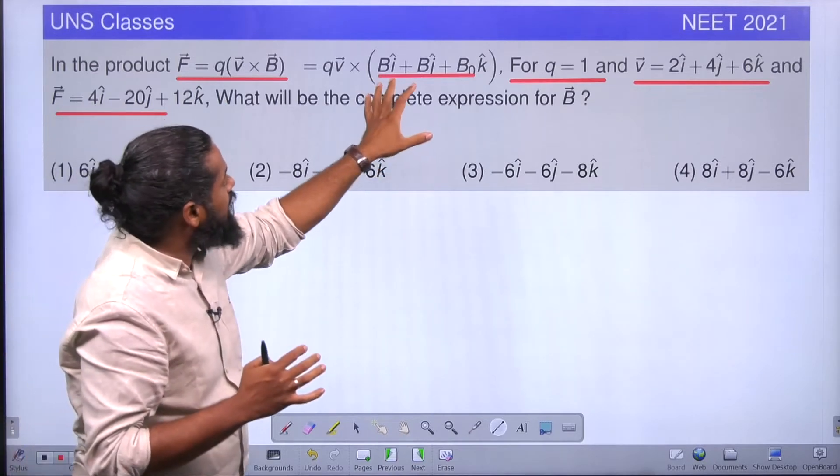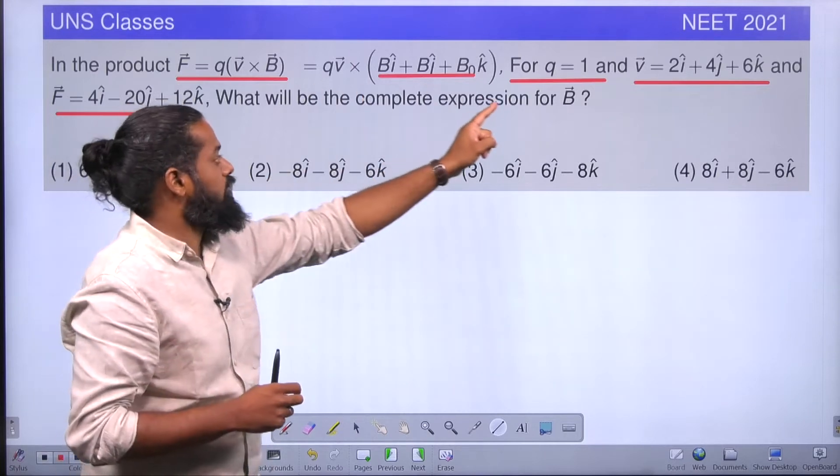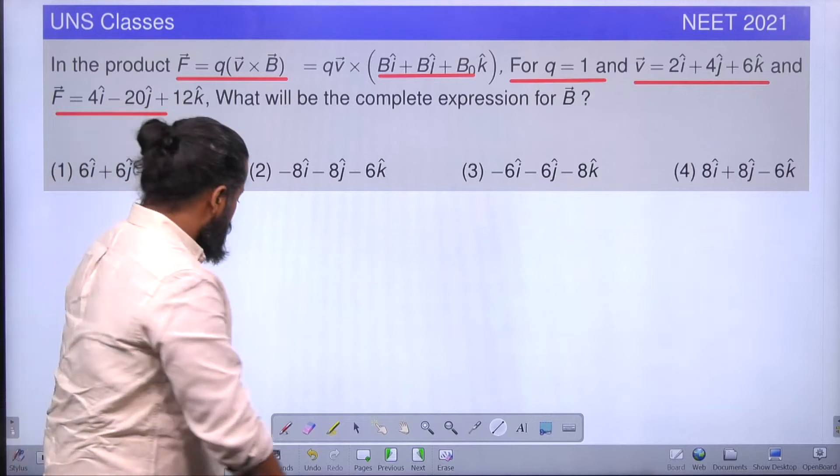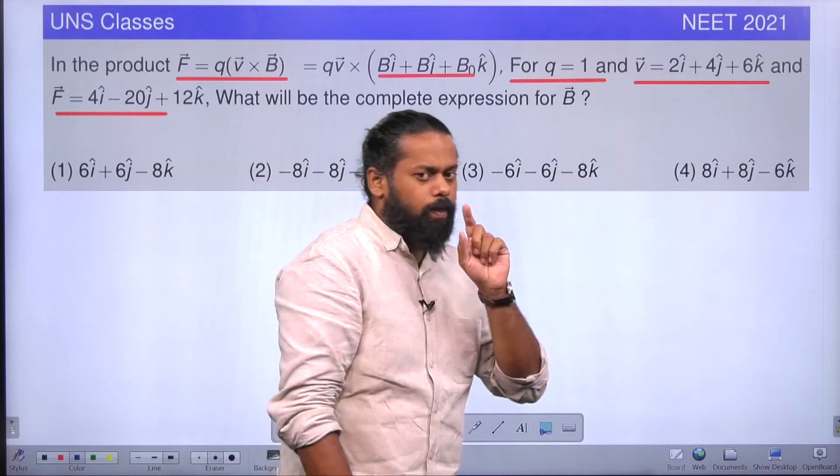So here the question is: if that is the case, how much is the value of B? Or what is the expression for B, the net magnetic field in that region? First of all, let us see the given information.